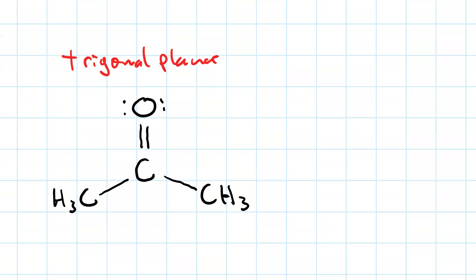So we say that acetone is a trigonal planar molecule, because that's the molecular shape around the interesting part, where there's a hetero atom.